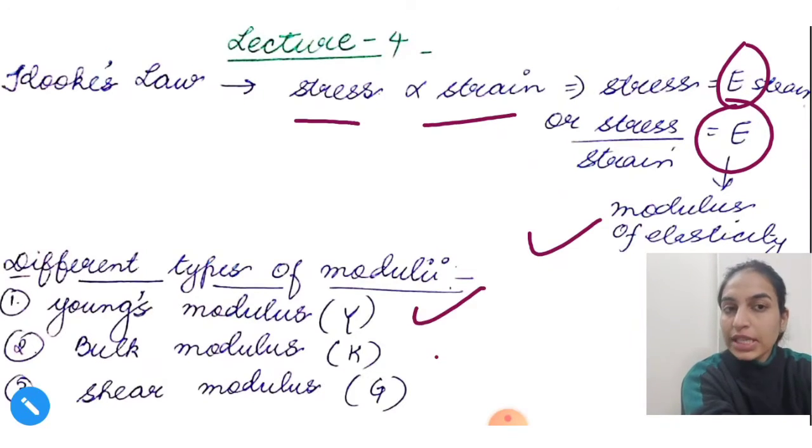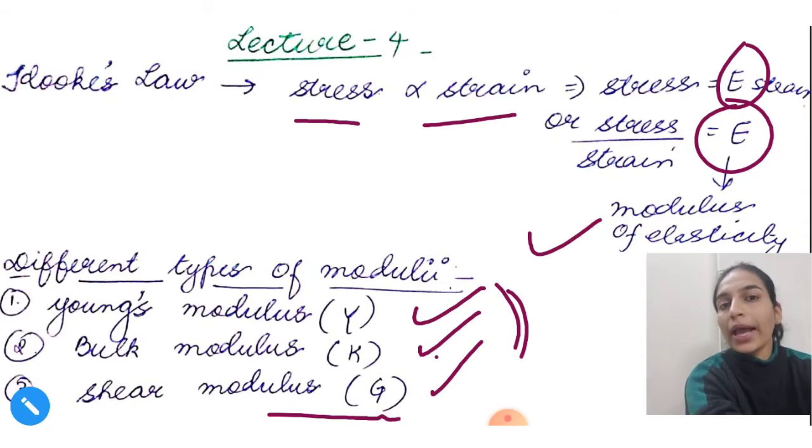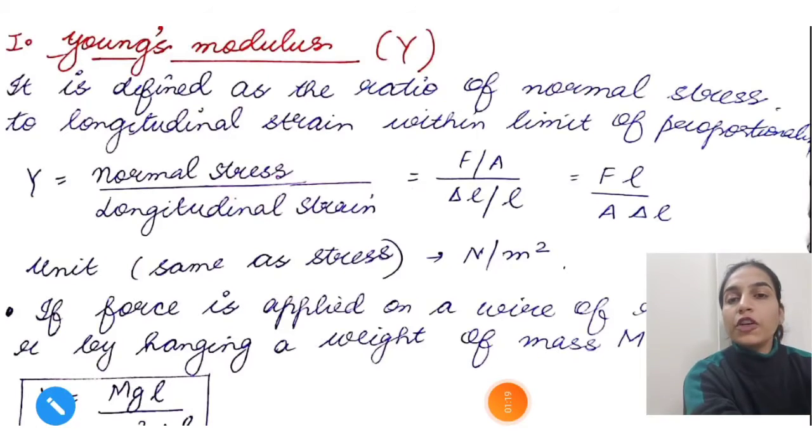First is Young's modulus, whose symbol is Y. The second is bulk modulus, whose symbol is K. And third is shear modulus, whose symbol is G. Last class I may have told you different symbols, but these symbols are used in the NCERT. So we will follow these: Young's is Y, bulk is K, and shear is G. First is Young's modulus. Young's modulus is related to length.